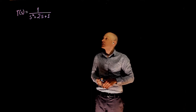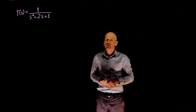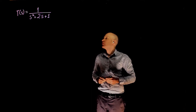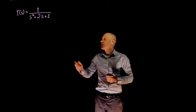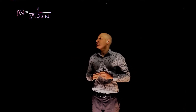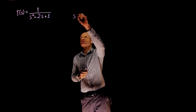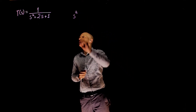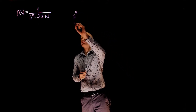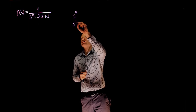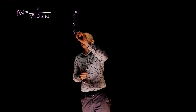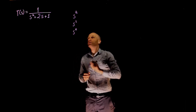Let's start by creating a Routh array, which in this case starts at the power of 2. We have s to the power of 2, s to the power of 1, and s to the power of 0.